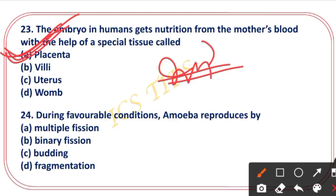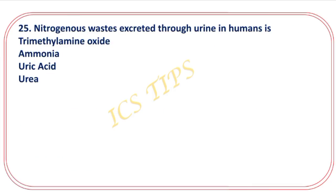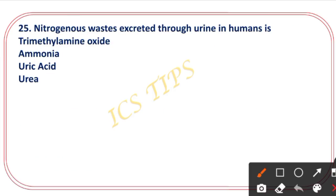Under favorable conditions, reproduction occurs by binary fission. The right answer is binary fission for this question.